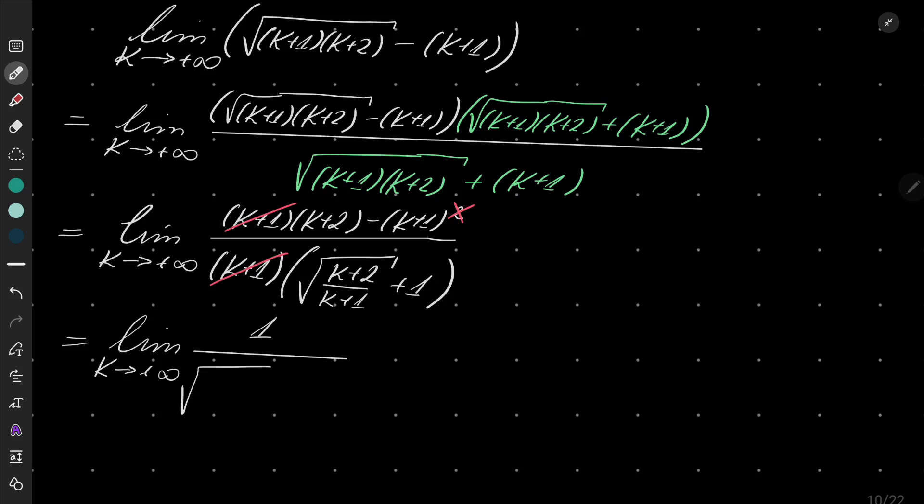under my square root, I can divide everything by capital K. So I have 1 plus 2 over capital K, over 1 plus 1 over capital K, plus 1.